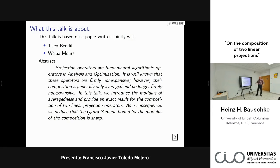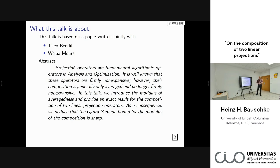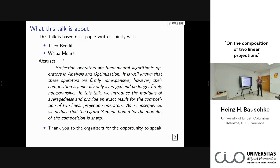I'm talking about joint work that I did with Theo, who was a postdoc with me in Kelowna. Some of you know John Borwein very well — Theo was technically John Borwein's very last student, though he couldn't even start. There's a connection through Walaa Moursi, who did his PhD with Warren Moursi, a postdoc of John Borwein. Walaa Moursi is now a professor in Waterloo. I'd really like to thank the organizers for the opportunity to speak about this topic, which I really like a lot.